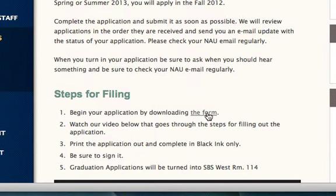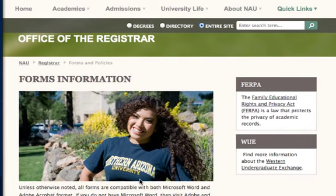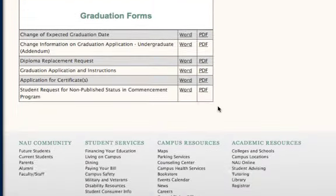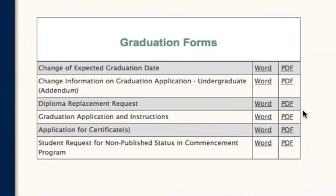Begin your application by downloading the form. This will lead you directly to the forms page for the Registrar. The graduation application can be found at the bottom of the page under Graduation Forms, Graduation Application and Instructions. You can either download it as a Word document or a PDF. What's nice about the Word document is that it is fillable, so if you do not have legible handwriting, the Word document may be your best option.